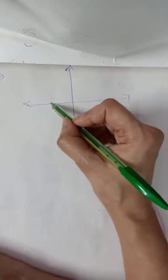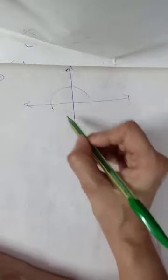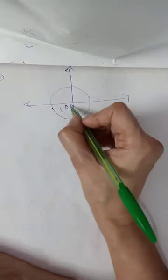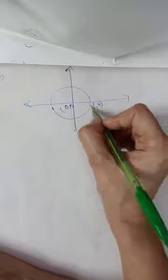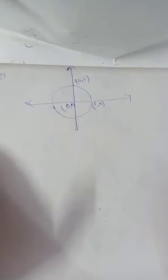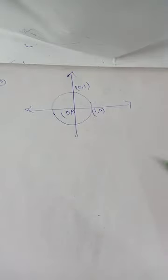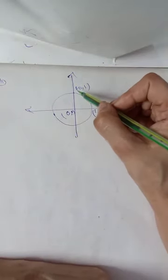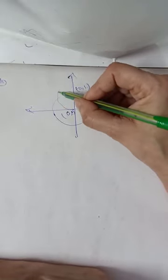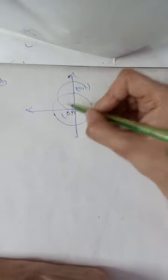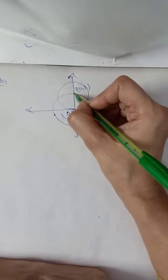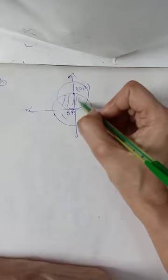We sketch the first circle with center at the origin and radius 1, and the second circle with center at (0, 1) and radius 1, positioned along the y-axis. We now need to find the enclosed area.